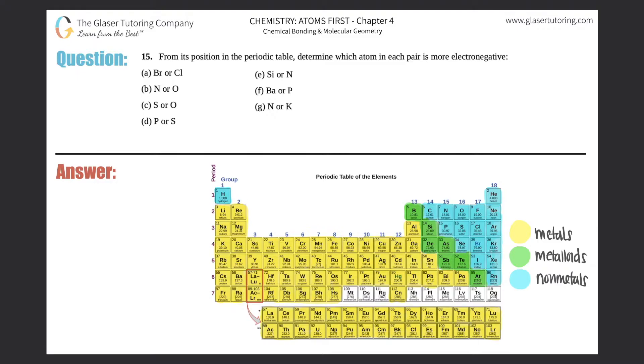Number 15, from its position in the periodic table, determine which atom in each pair is more electronegative. Okay, and then we have A through G, so that's perfect. So we have to figure out which atom between the pairs is more electronegative.